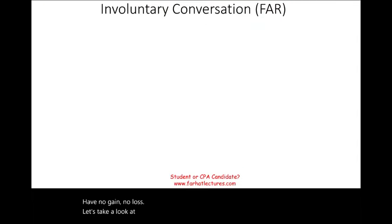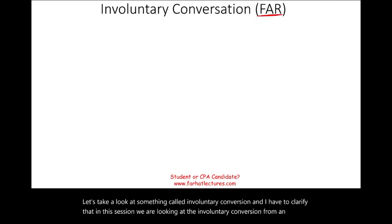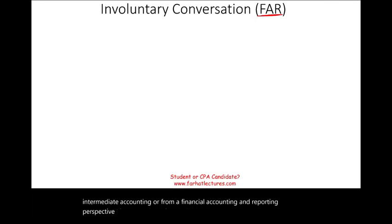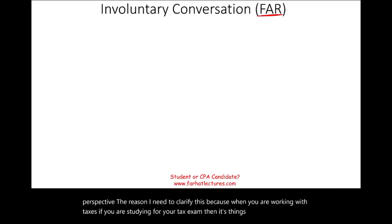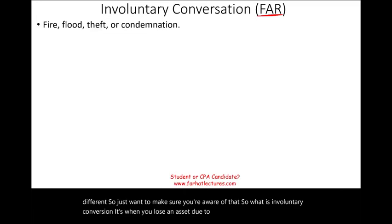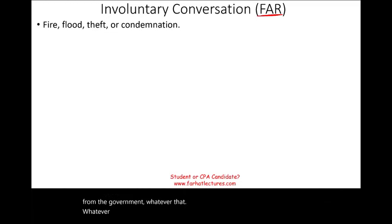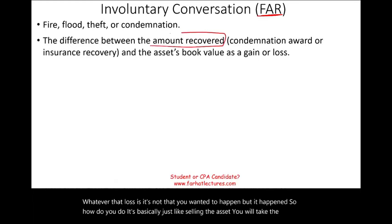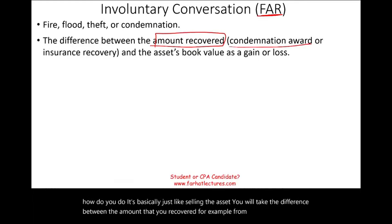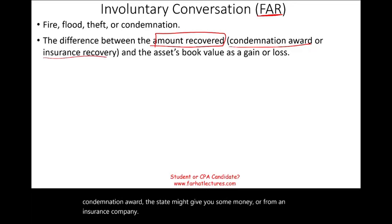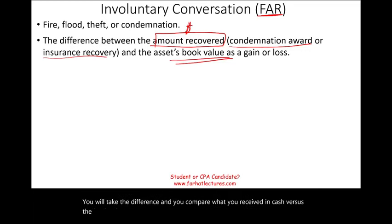Now let's look at involuntary conversion. In this session, we're examining it from an intermediate accounting or financial accounting and reporting perspective — note that tax treatment is different. Involuntary conversion is when you lose an asset due to fire, flood, theft, or government condemnation — not because you wanted to. It is treated basically the same as selling the asset: compare the amount recovered (from a condemnation award or insurance company) to the book value, and record the gain or loss.